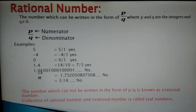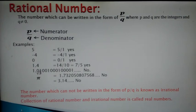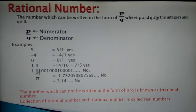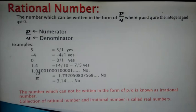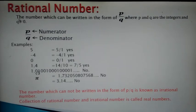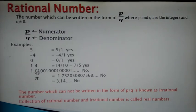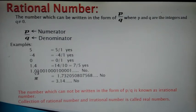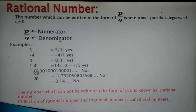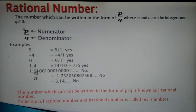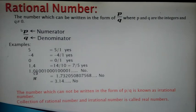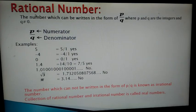The next number we are going to discuss is rational number. In seventh standard we already studied about rational numbers. We know that if a number can be written in the form of p by q, where p and q are integers and q is not equal to 0, that number is known as a rational number. Here p is the numerator and q is the denominator.